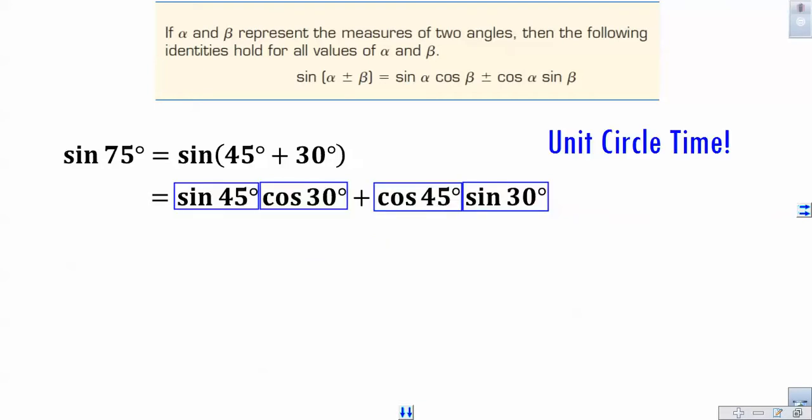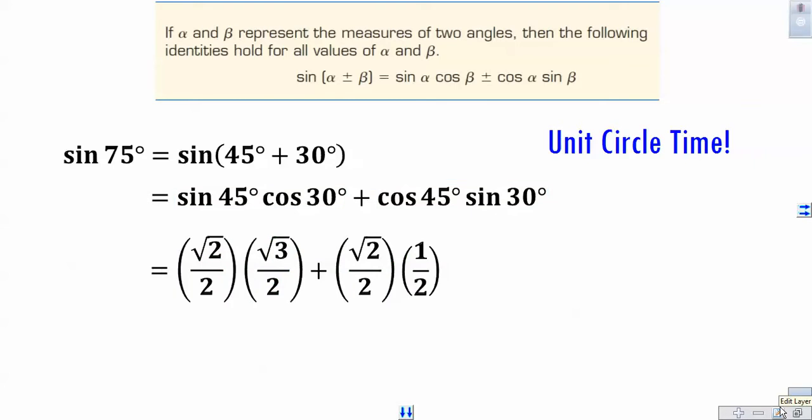Let's figure out what the sine and cosine are of those given angles. Sine of 45 would be square root 2 over 2. Cosine of 30, that's square root 3 over 2. And we're multiplying those together. Then we're going to add the cosine of 45, square root 2 over 2. Sine of 30, that's 1 half. So we're going to be multiplying first those values and then adding them afterwards.